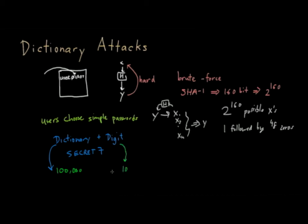There are 10 possible digits, and so one question - we can pause the video and think about this for a moment. If you have a dictionary of 100,000 possible words, and a user actually forms his or her password by taking one of these dictionary words and appending a single digit to it, how many possible password combinations are there? You can figure that out by multiplying the number of possible digit combinations, and you get 100,000 times 10, which is basically 1 million.